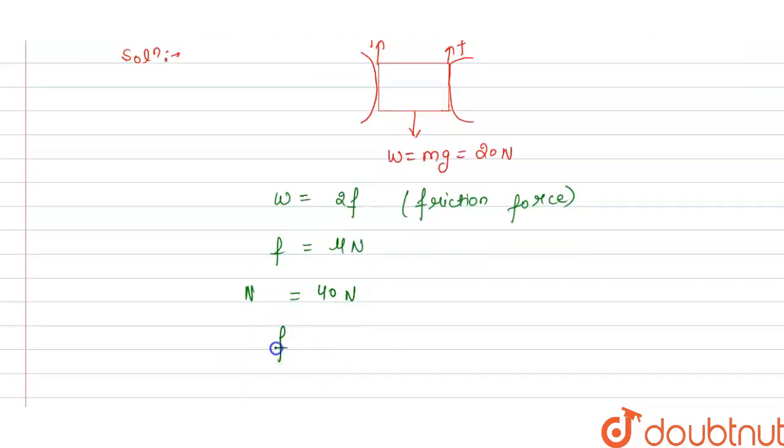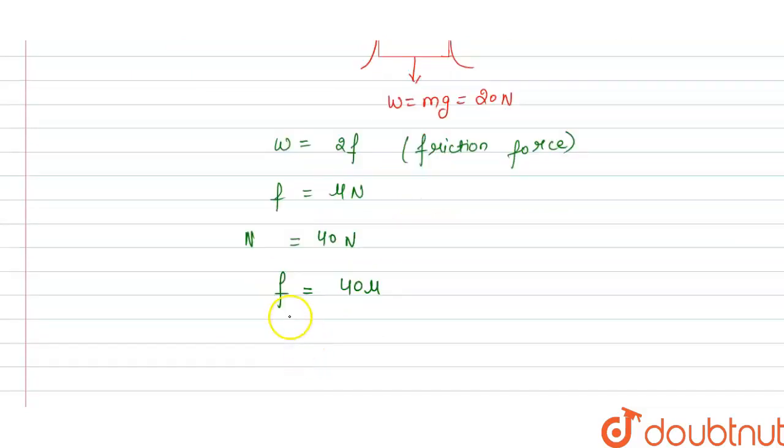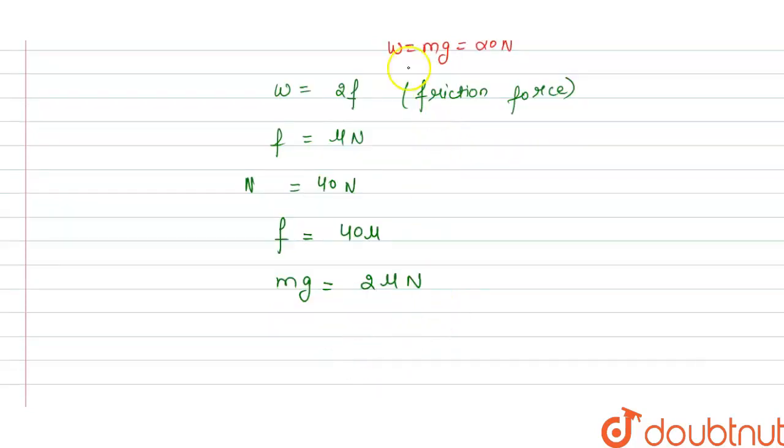So if we put the value here, we get frictional force is equal to mu times 40 newton. And we have weight is equal to twice of friction force. So weight is mg and this will equal to twice of mu n. Let us suppose this is equation 1.